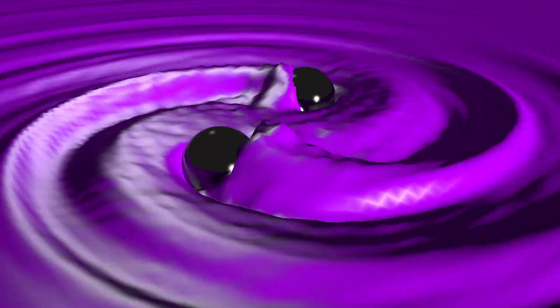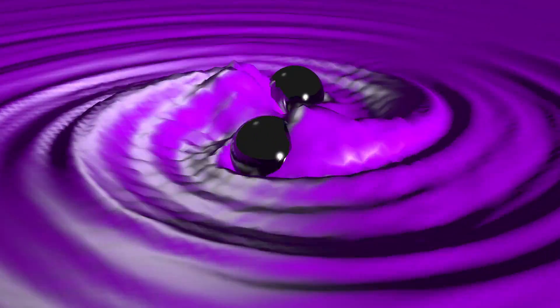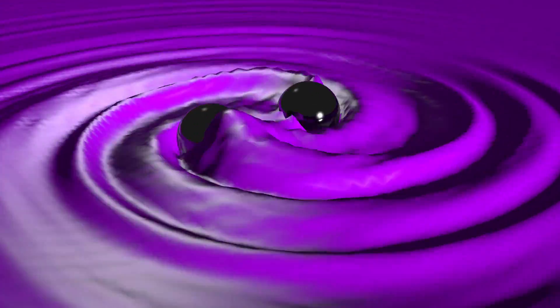These orbiting masses created ripples in the fabric of space-time, called gravitational waves. And the closer they orbited, the bigger these waves got, until the black holes collided at half the speed of light.